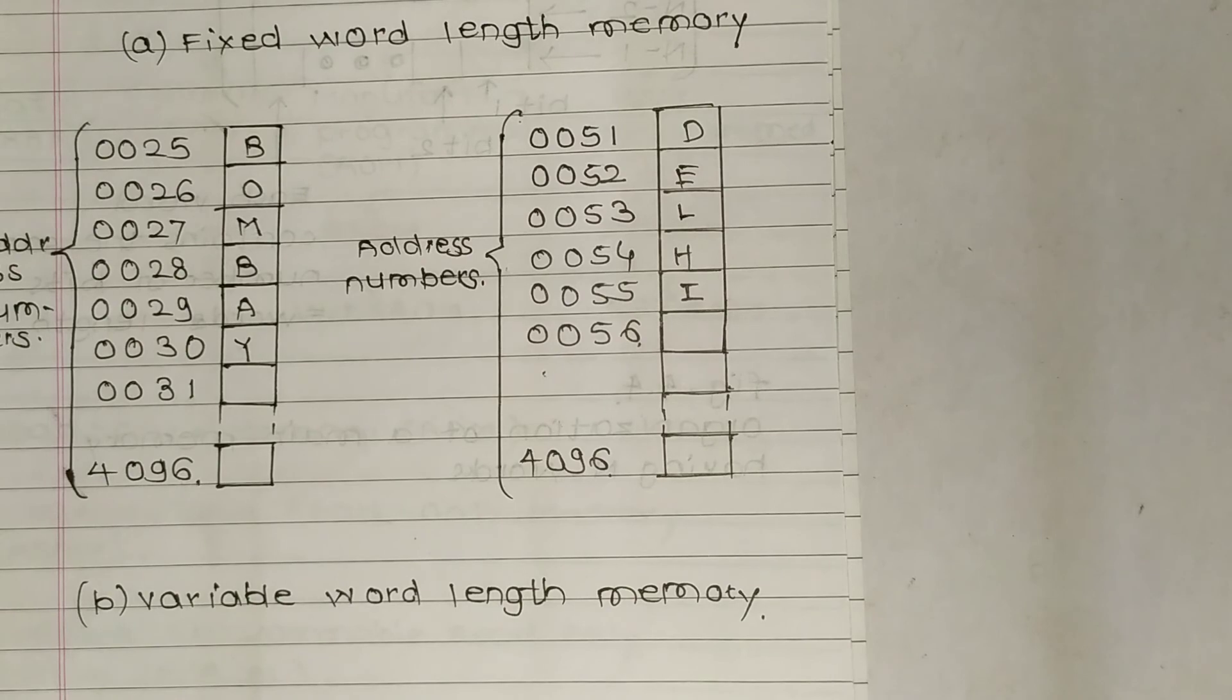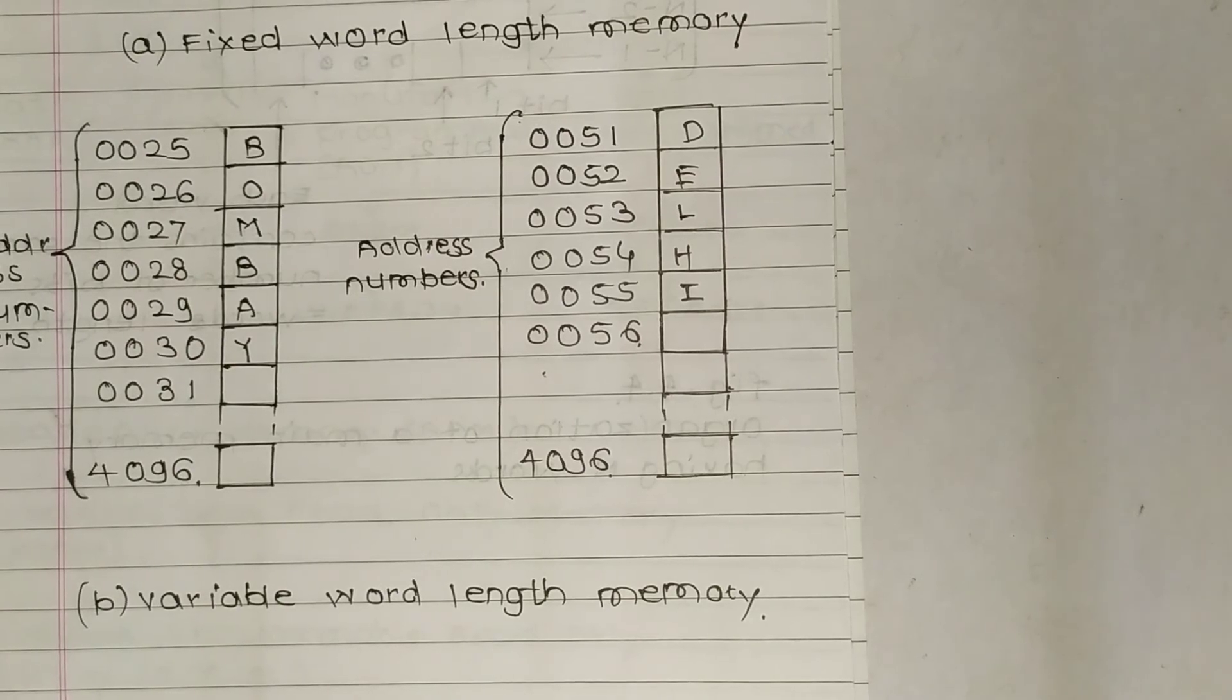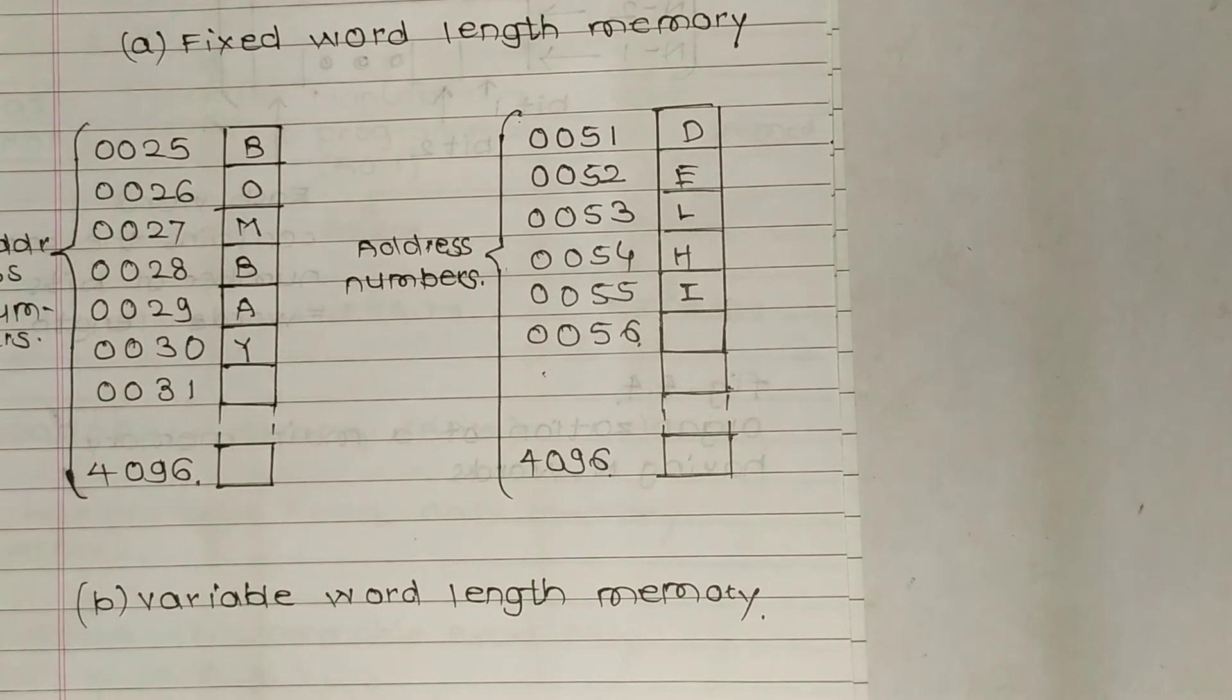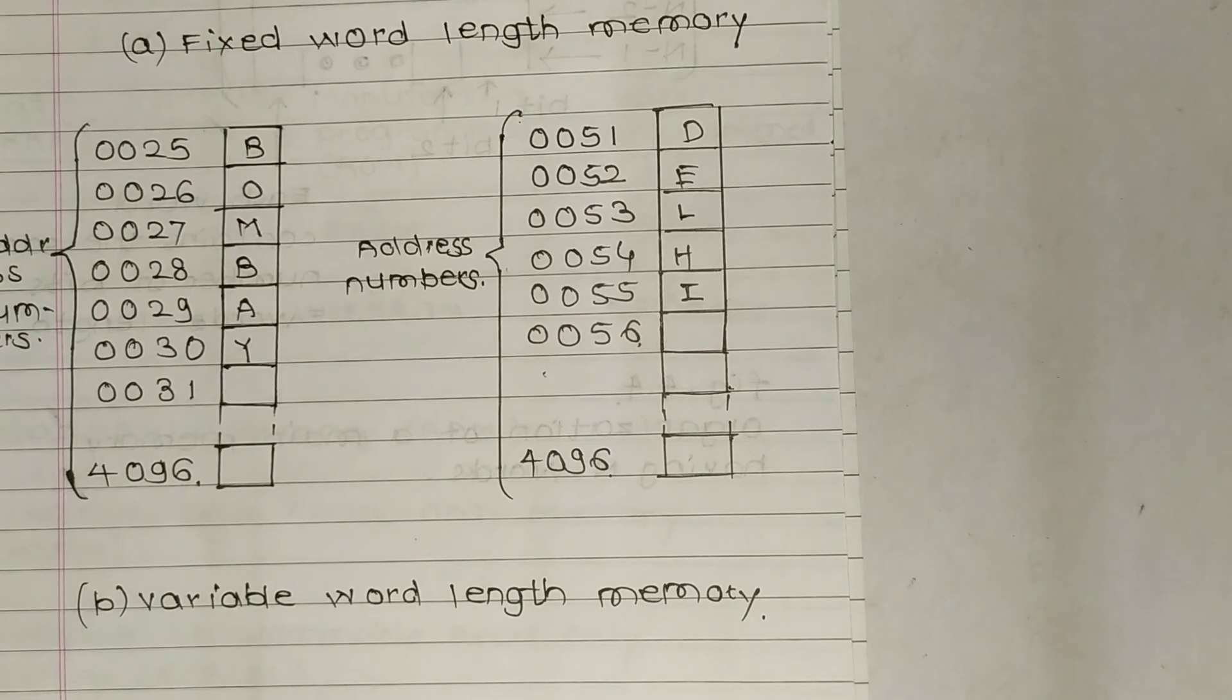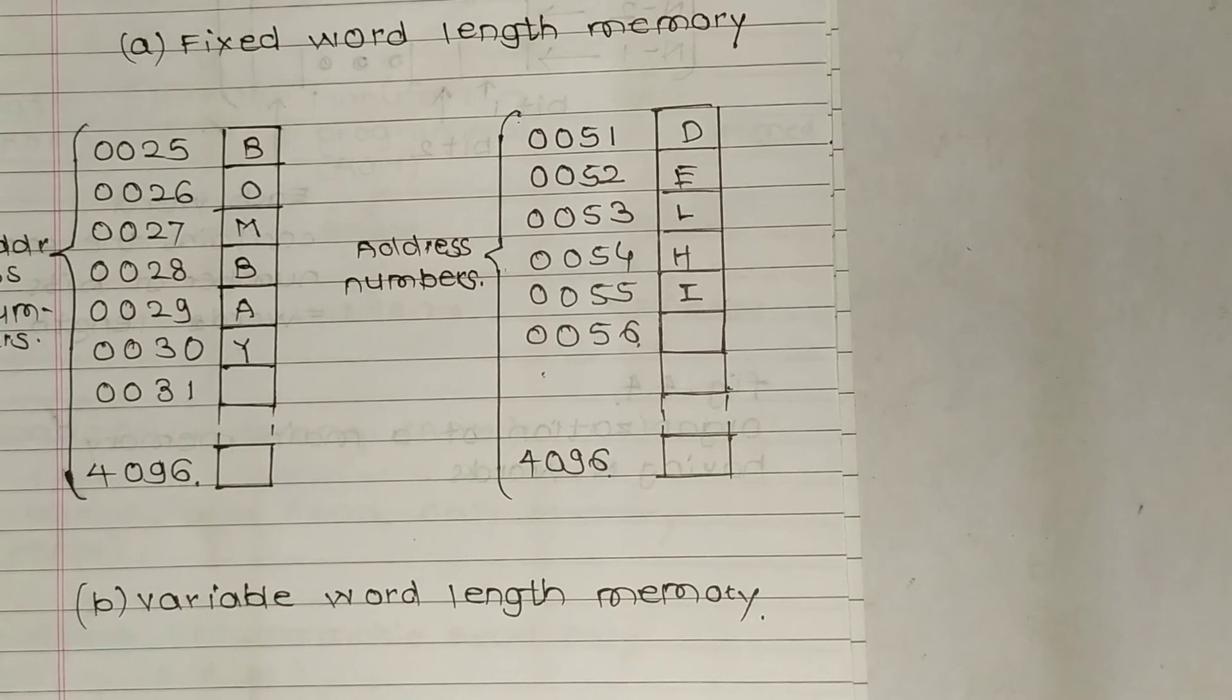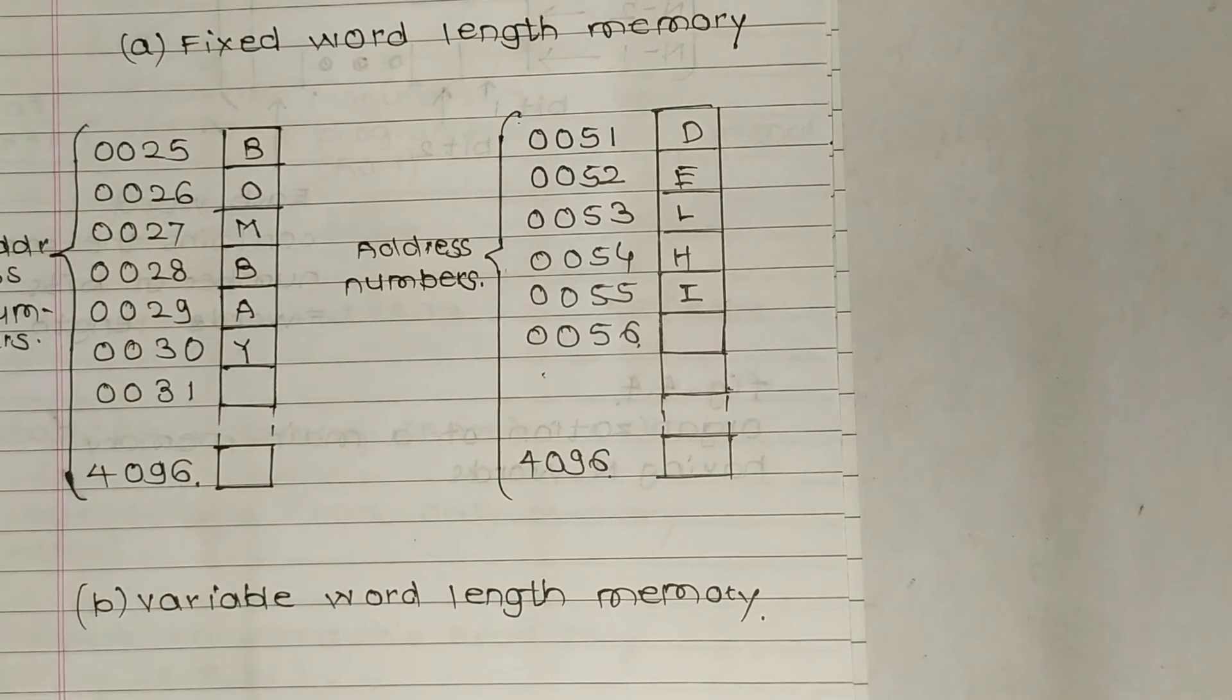There are two types: first is fixed word length memory and second is variable word length memory. In variable word length memory, the computer intelligently adjusts its storage cells, thus utilizing the storage space which was not used. Variable word length approach is better than fixed word length method.